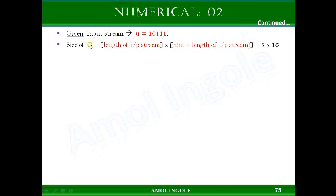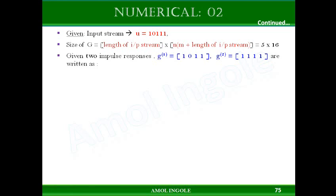This is the given input string, and since we have a finite length input bit string, we can write the size of the generator matrix. It is given by X, the length of the input bit string (which is 5), by N times (M plus X). N is 2, M is 3, and the length of the input bit string is 5, so 5 plus 3 is 8, and 2 times 8 is 16. So the size of the generator matrix would be 5 rows and 16 columns.